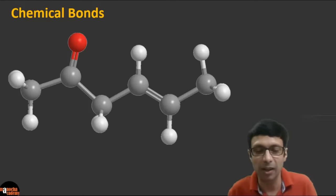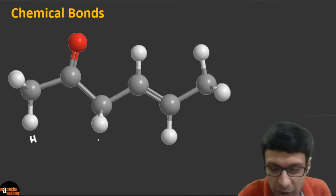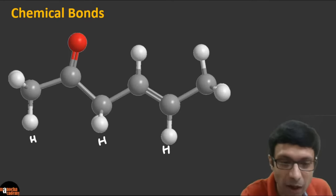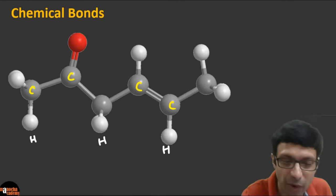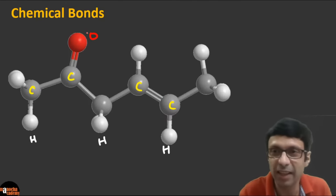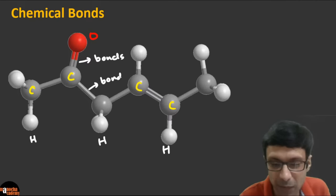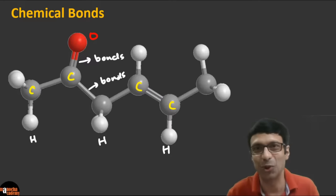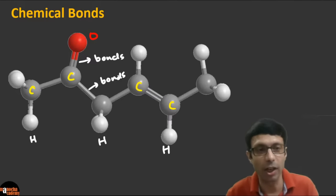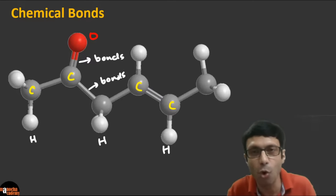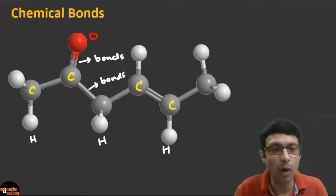As you can see in the picture, there are different types of atoms. The white ones are hydrogen atoms, the grayish ones are carbon atoms, and the red one is the oxygen atom. You can see there are sticks bonding these atoms — we call these chemical bonds. Atoms combine with each other to form molecules, and the force of attraction which holds the molecule together is known as a chemical bond.